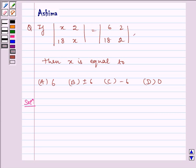Hello and welcome to the session. Let us understand the following problem today. If determinant |x 2; 18 x| equals |6 2; 18 2|, then x is equal to: (A) 6, (B) ±6, (C) -6, or (D) 0.